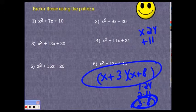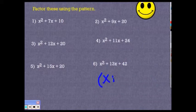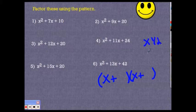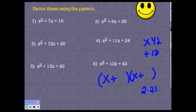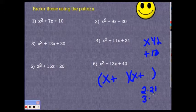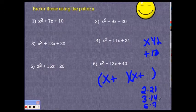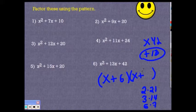And we'll do number 6 quickly. Multiply to 42, add up to 13. It's not 42 and 1. How about 2 and 21? No. 3 and 14? No. 6 and 7 — they do add up to 13. That's my winner — 6 and 7. Winner, winner, chicken dinner. I am done.